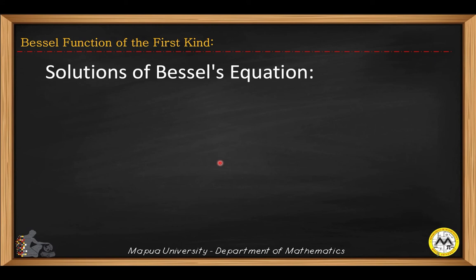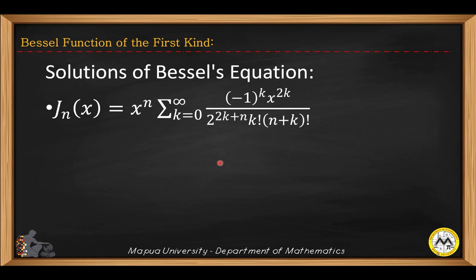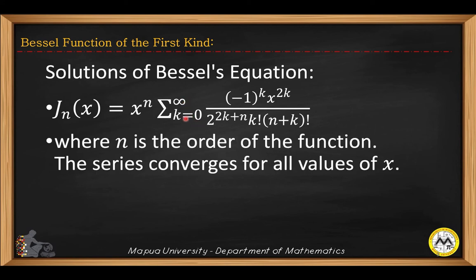Now let's consider the Bessel function of the first kind — the first linearly independent solution of Bessel's equation. It is denoted by J sub n, which equals the following series expression where k takes values from zero to infinity. Here n is called the order of the function, and the series converges for all possible values of x.